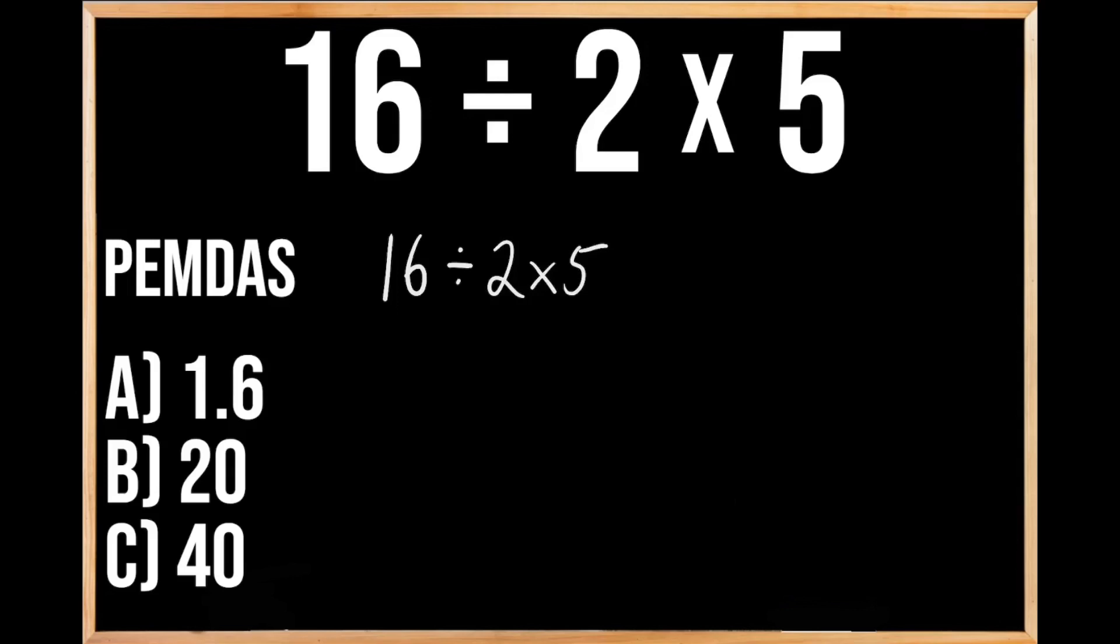Now a lot of people when working through this problem will make the mistake of starting out with multiplication. So they'll begin by multiplying 2 times 5, which we know is going to give us 10, and then we'll bring down the rest of the problem. So we have 16 being divided by 10, and when we divide 16 by 10, we get 1 and 6 tenths.